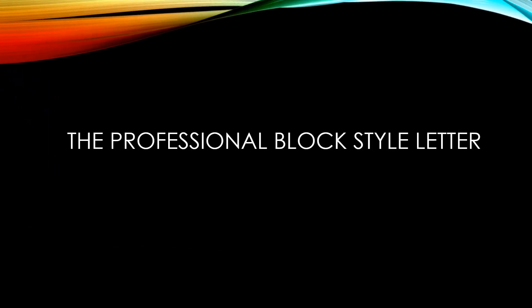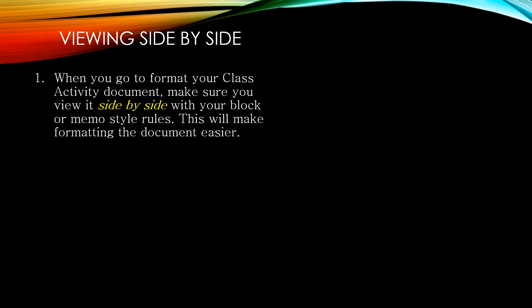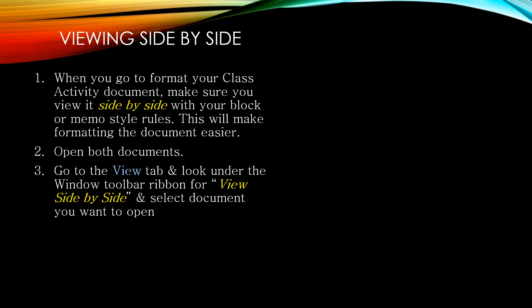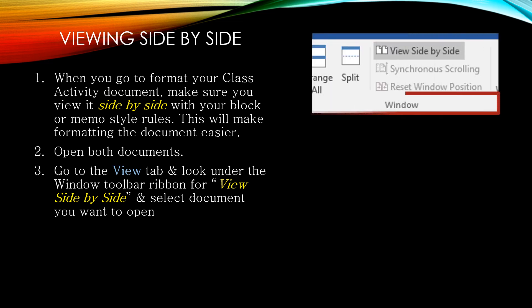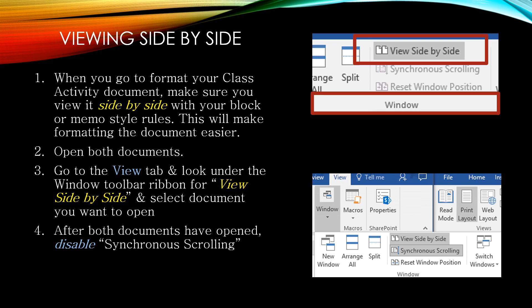The professional block style letter. When you go to format your block style letter or your memo, make sure you view the rules with the activity side by side. This will make formatting your document easier. Make sure you have both documents open. Go to the View tab and look underneath the Window toolbar ribbon for View Side by Side, then select the document you want to open. After both documents have been opened, disable the synchronous scrolling and then reset your window position. Also make sure that you have your formatting marks turned on.